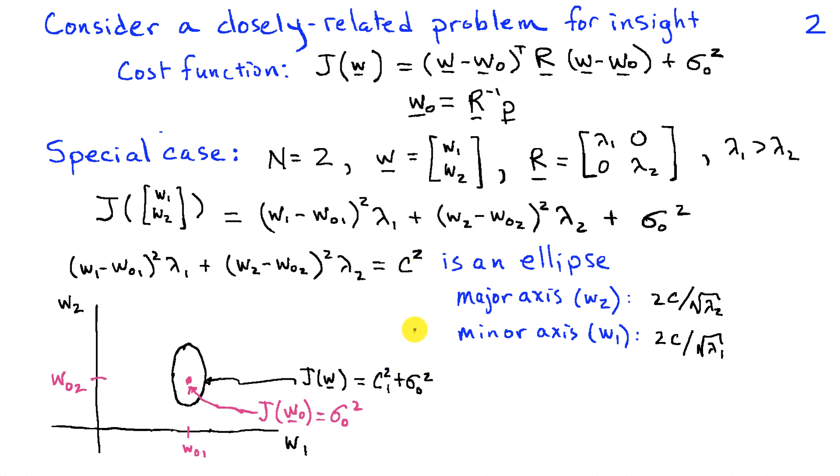In that case, the cost function simplifies to sigma zero squared, and that's the smallest possible value. And that corresponds to C squared being equal to zero. If I choose some value for C squared that's greater than zero, then my cost function is going to have this elliptical shape. So this is a contour of this three-dimensional function.